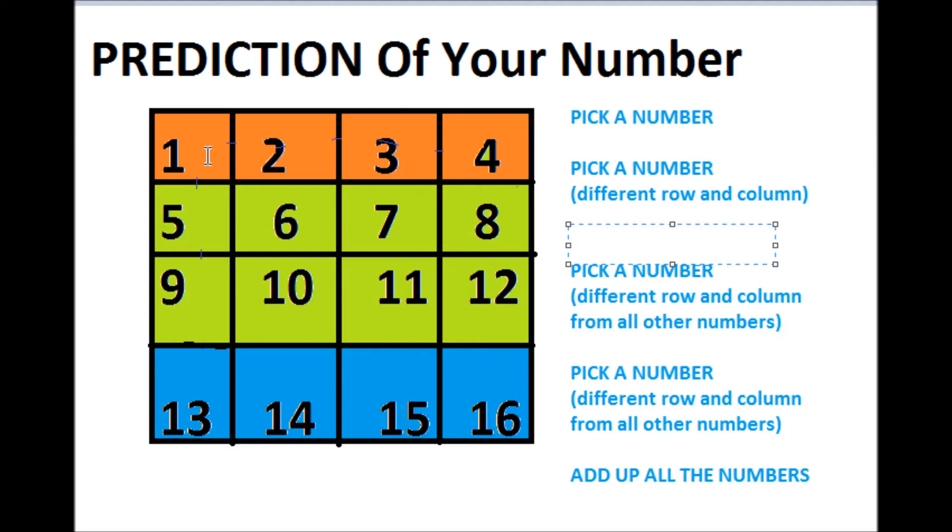Suppose I am giving you an example. One number you choose, so the first number is row 1: 5, 9, 13 and column 1, 2, 3, 4. So I can choose from these numbers.